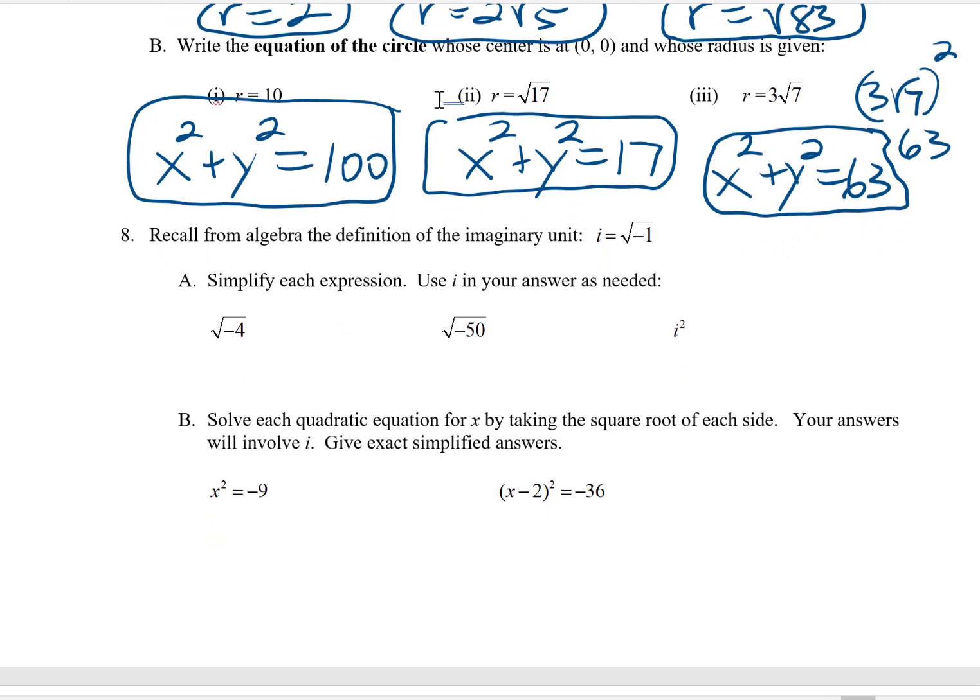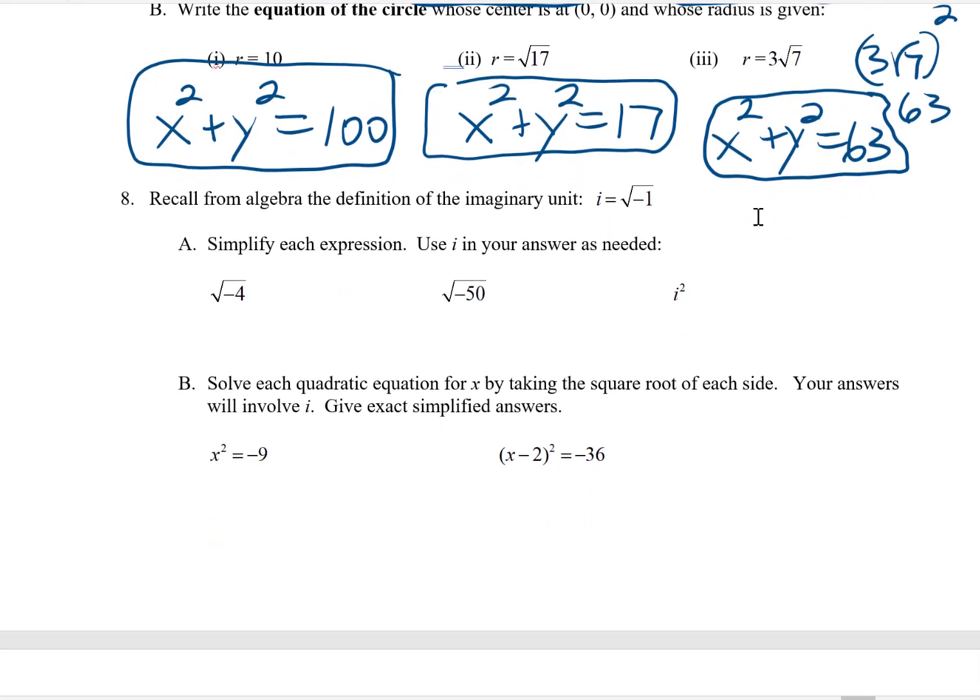And then problem number 8. Remember from algebra the definition of the imaginary unit i. i is the square root of negative 1. You can use that to simplify square roots in the world of imaginary and complex numbers. So square root of negative 4, I can think of this as square root of 4 times the square root of negative 1. Well, square root of 4 is 2. Square root of negative 1 is i. This is equal to 2i.